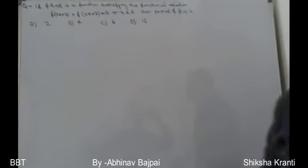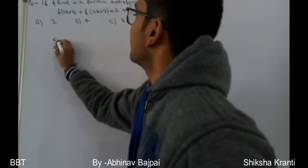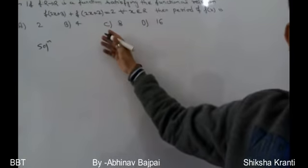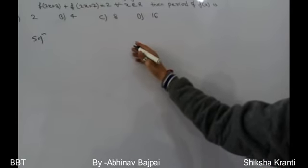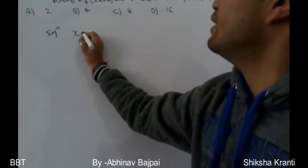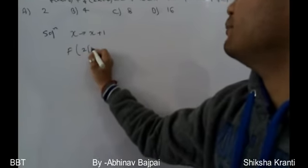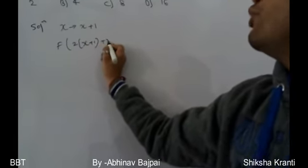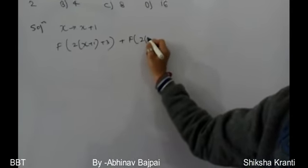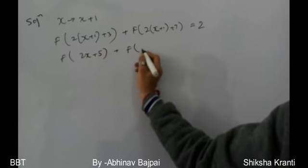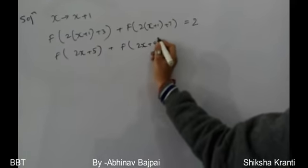To find the period, we first replace x by x + 1 in the given equation. We get f(2(x+1) + 3) + f(2(x+1) + 7) = 2, which simplifies to f(2x + 5) + f(2x + 9) = 2.